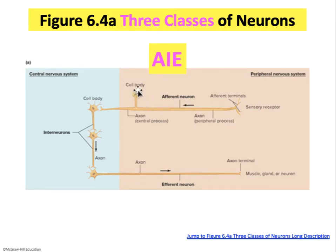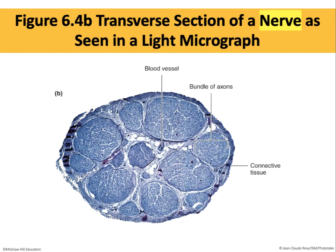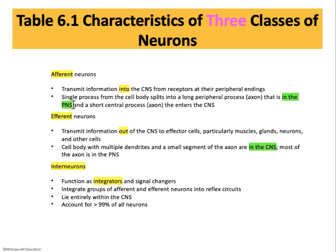One will also note that the cell body of afferent neurons is on a branch to one side of the main axon — an alternative arrangement. In physiology, terminology matters: a nerve is a bundle of connective tissue carrying many nerve fibers, so the correct term for each individual cell is a nerve fiber. We can see blood vessels embedded among bundles of axons with connective tissue holding the structure together in a cross-section of a nerve. Table 6.1 reiterates the similarities and differences in architecture of afferent, efferent, and interneurons.